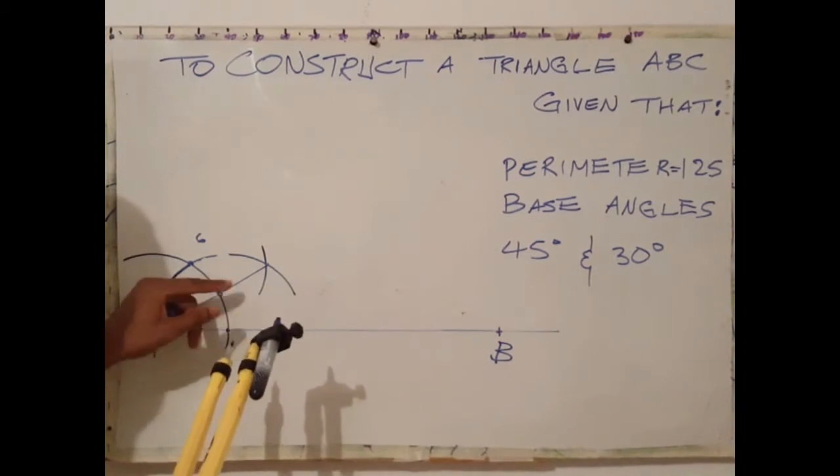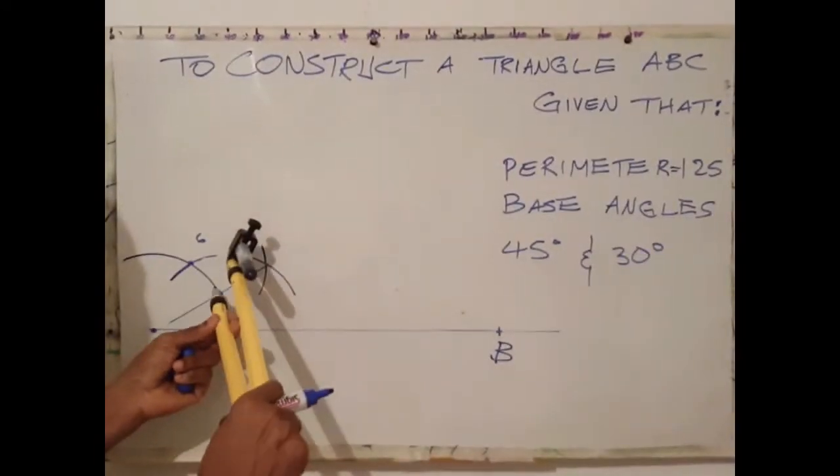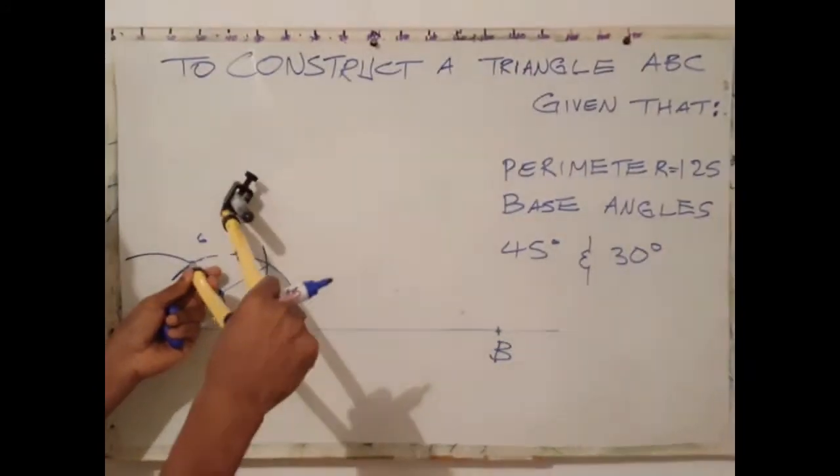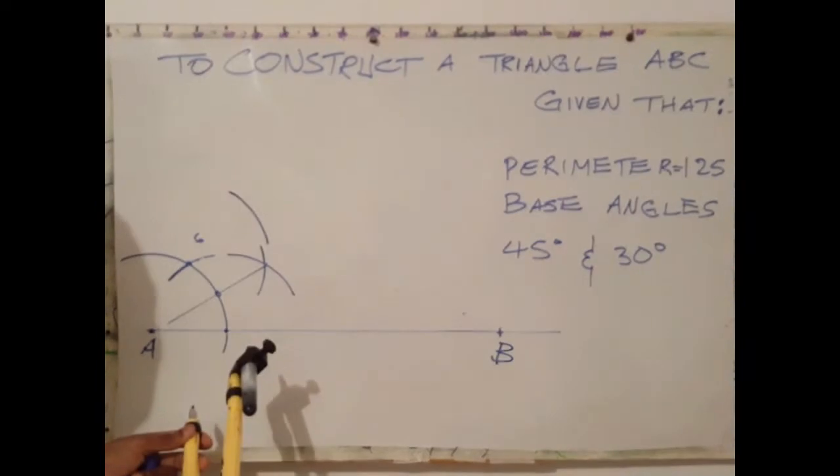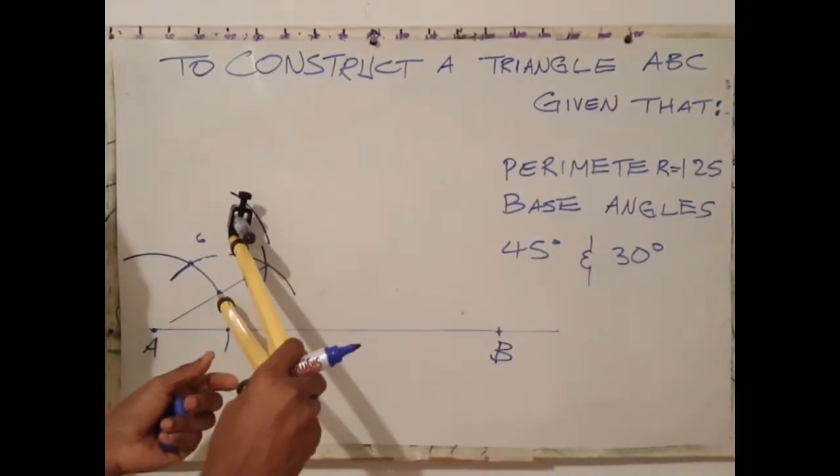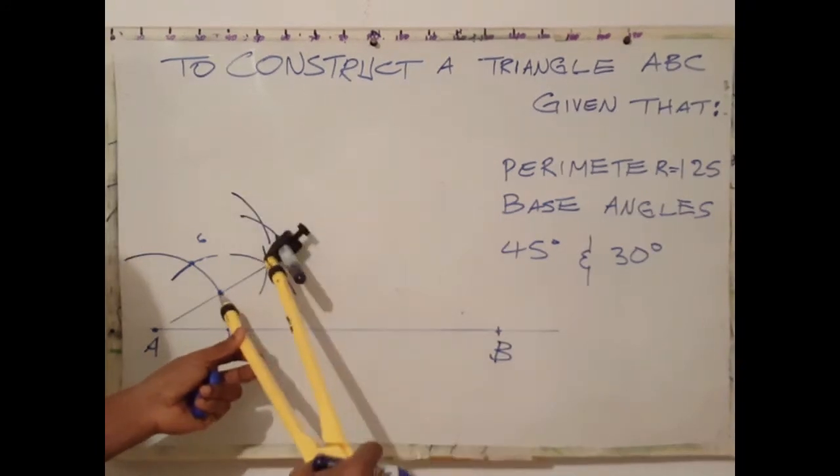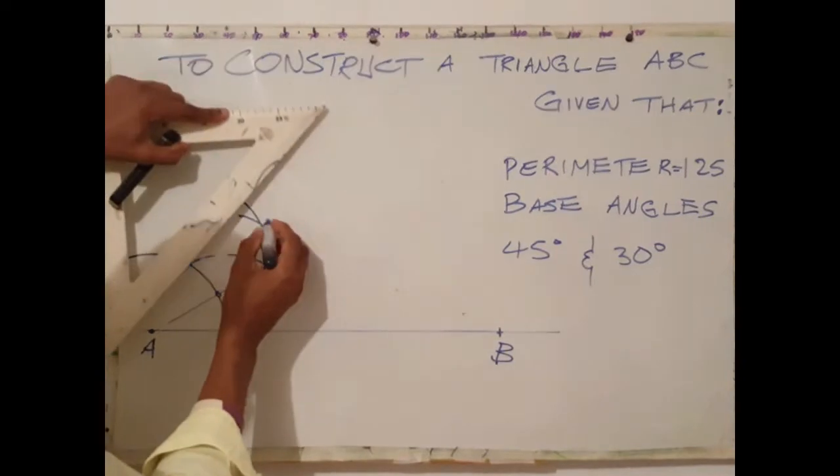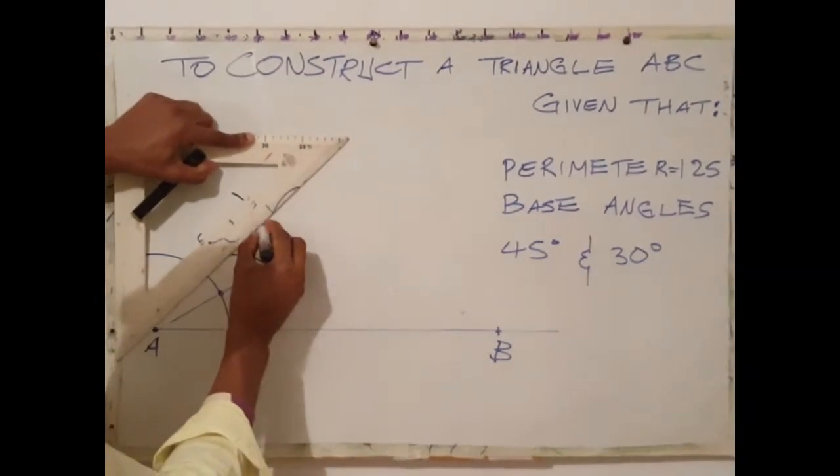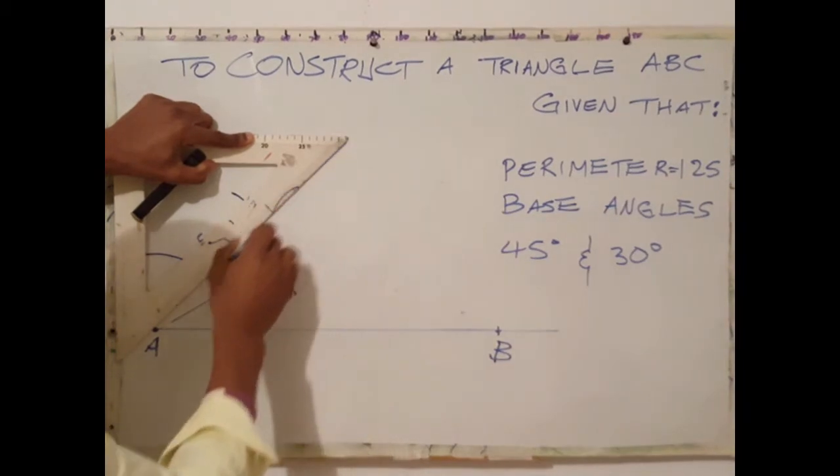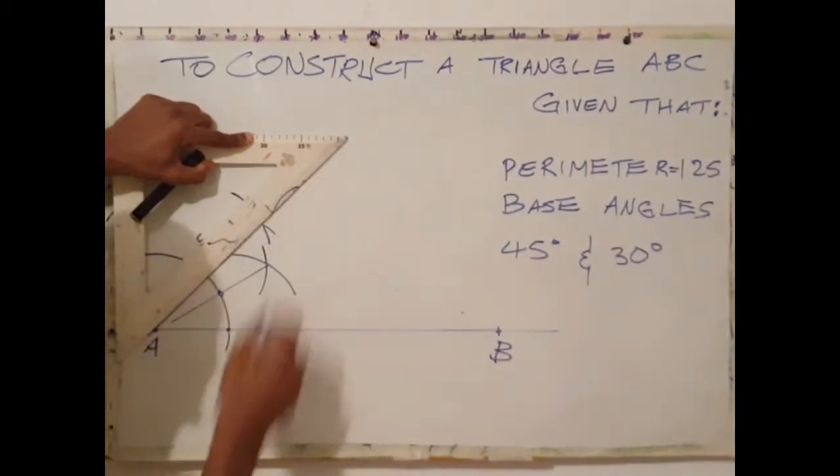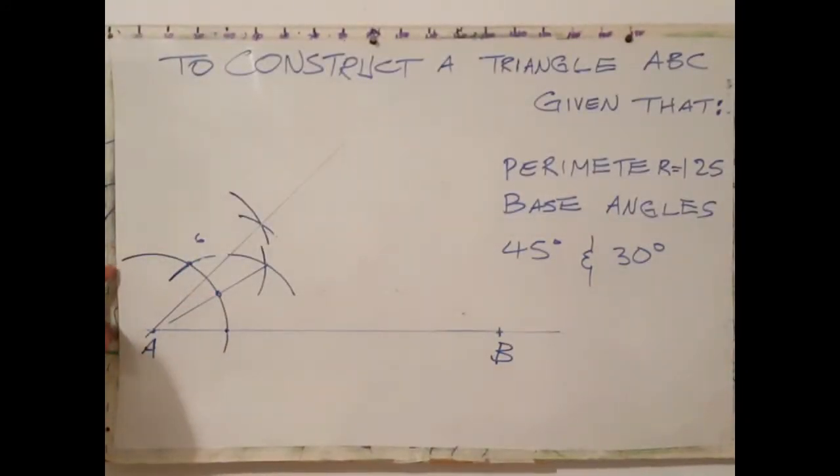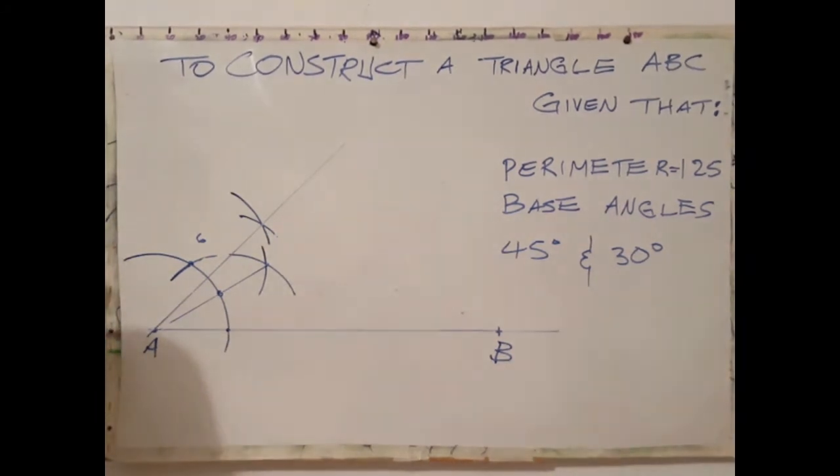I adjust my compass to the radius. Using here as center, scribe an arc. Without changing the radius, using the 30° point as center, scribe arc number two. The next step is to draw straight lines from A to the point where the 45° angle arcs meet. So this is my 45° angle. Of course we could have drawn the 90° then bisect. It can work either way.